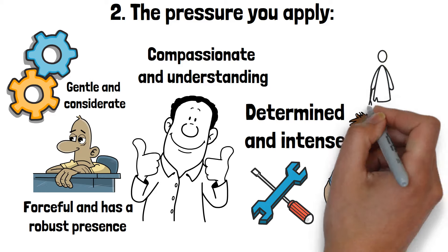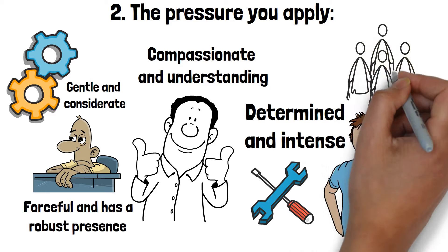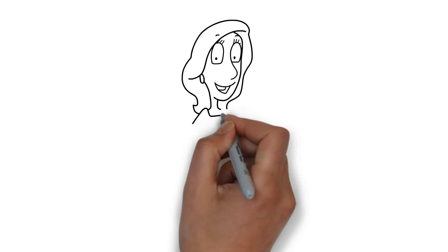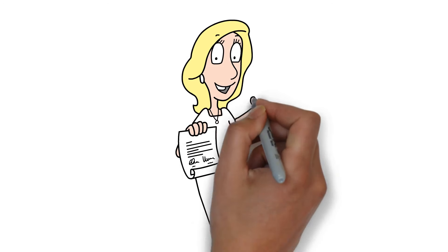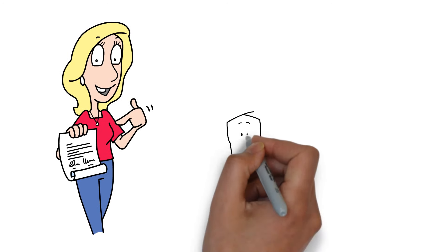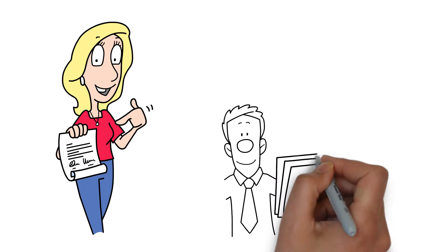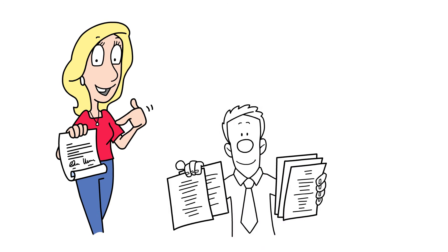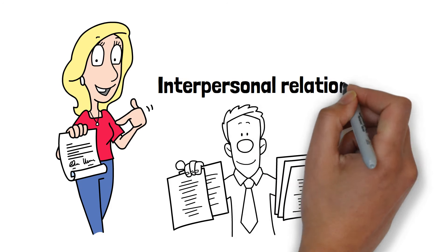Observing the pressure you apply can give you a better understanding of your emotional intensity and how you relate to others. Notice how much pressure you use when writing. Is it heavy and bold or light and gentle? This simple aspect of your handwriting can reveal a lot about your emotional state and interpersonal relationships.